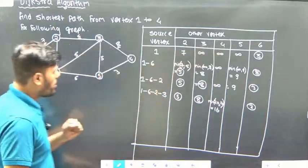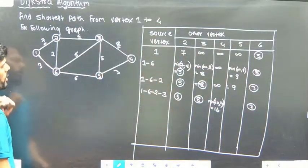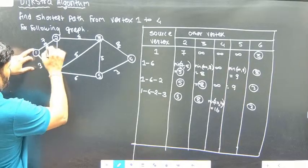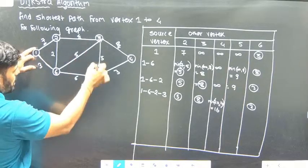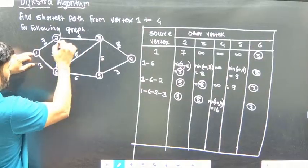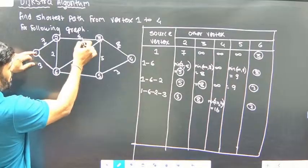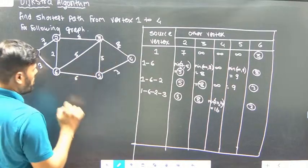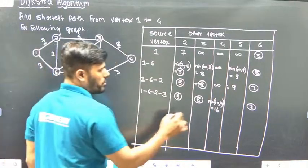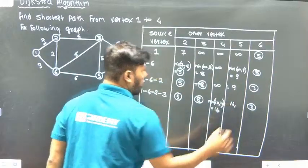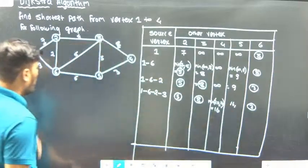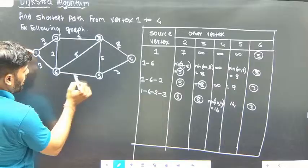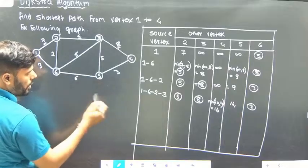Next, we check about vertex 5. To go to vertex 5, the minimum is via vertex 2, then via vertex 5 giving 15. Also we can go via vertex 6: 3 plus 6 equals 9.